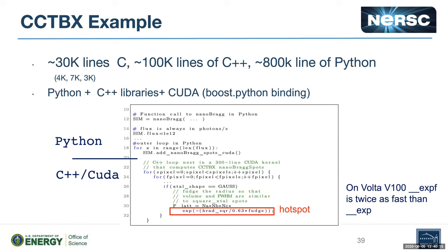CCTBX is the common crystallography toolbox — it's multi-language: C, C++, CUDA, and the driver is in Python. The kernel we used is called the NanoBragg. This shows the cartoon of how the code is composed: there are outer loops that set up inputs and a lot of things happen in Python, and at some point they move to CUDA. This code has in a loop a call to the exponential function. It turns out that on all processors, they have specialized hardware instructions for intrinsics — exp in single versus double — with at least twice the throughput for single versus double.